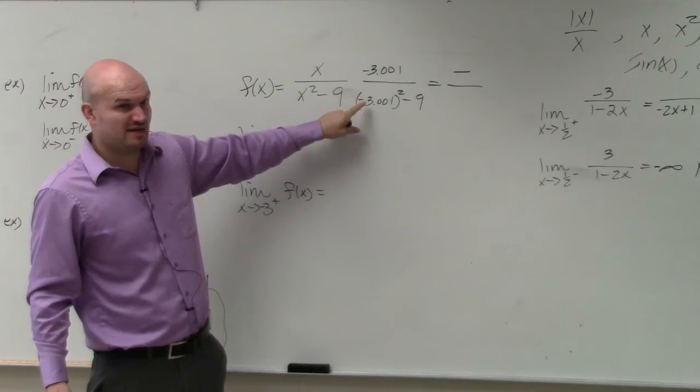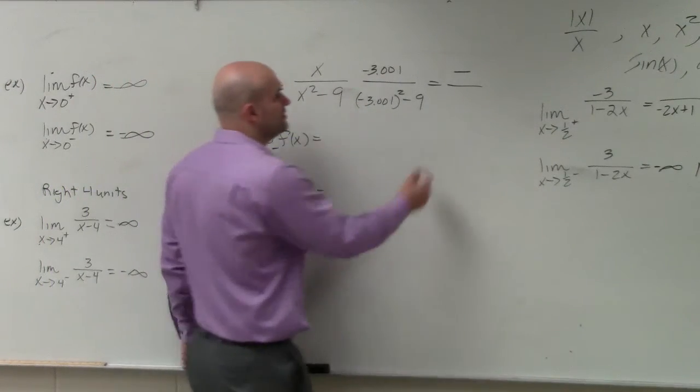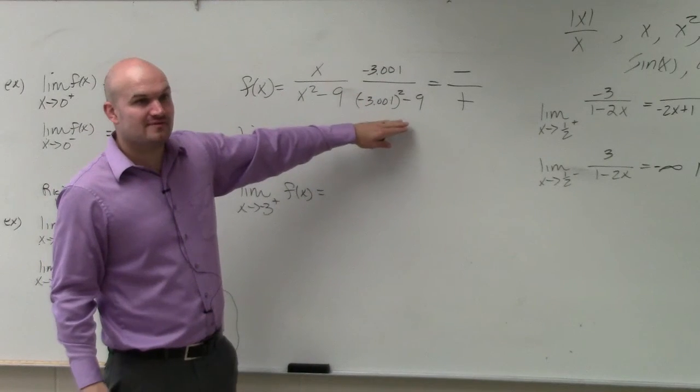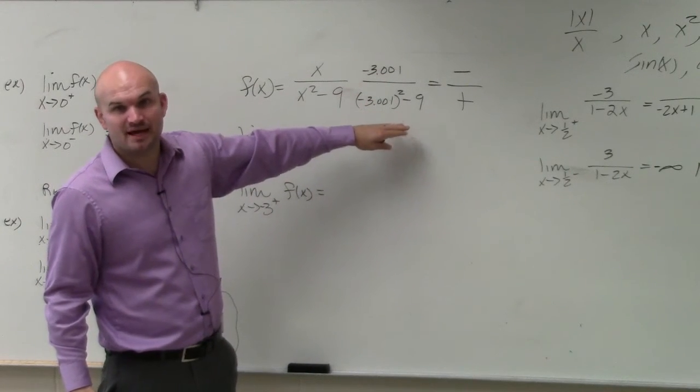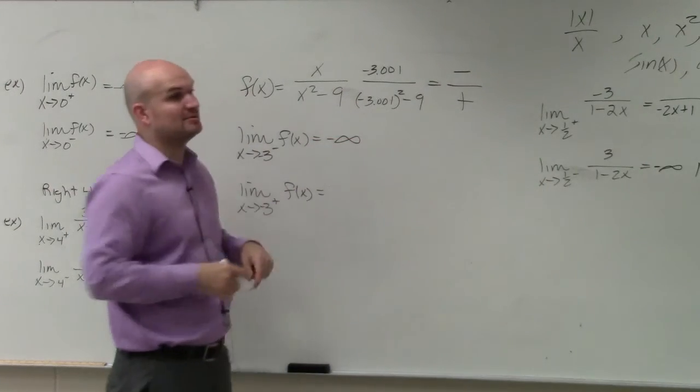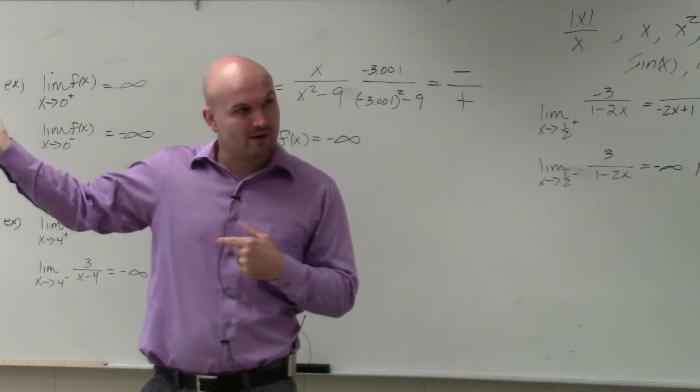Not by much, but it is. So that's now larger than 3 squared. So then minus 9 is going to give you a positive number. So if you have a negative divided by a positive, that's now going to go towards negative infinity, which we were able to confirm in our table, as well as confirm in our graph.